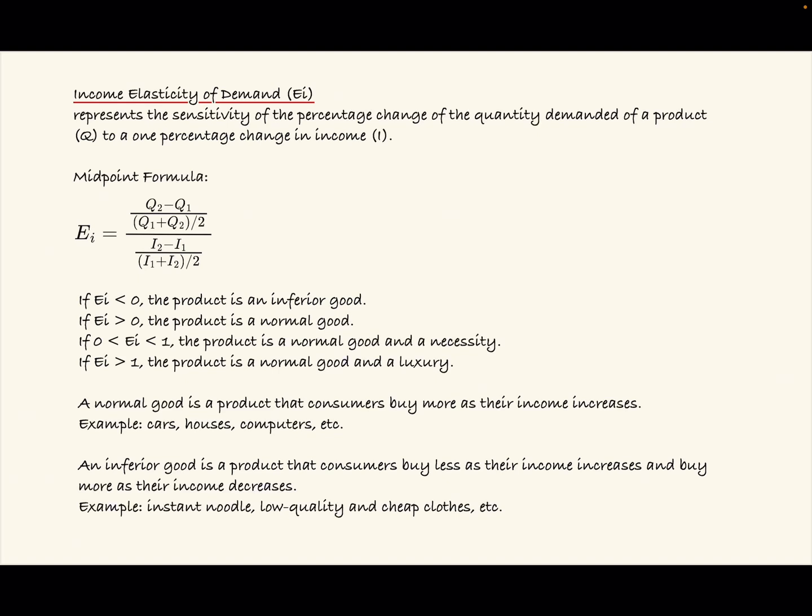An inferior good is a product that consumers buy less as their income increases and buy more as their income decreases. For example, instant noodles, low-quality and cheap clothes, etc.